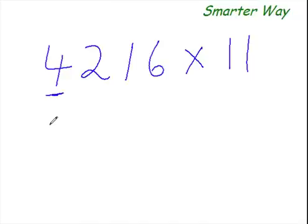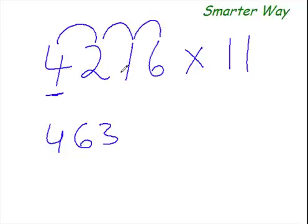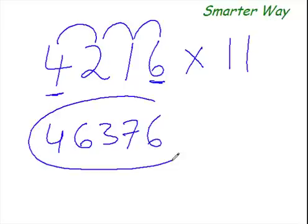So, copy the first digit as it is. Next digit would be 4 plus 2 is 6. Next one would be 2 plus 1 is 3. Next one would be 1 plus 6 is 7. And copy this 6 as it is. This is your answer. Now tell me, wasn't that fast?